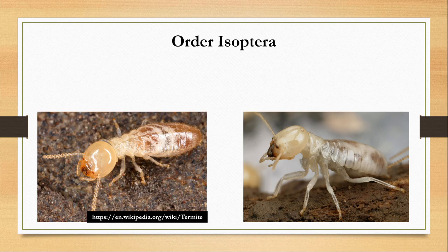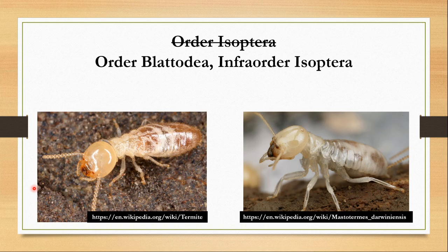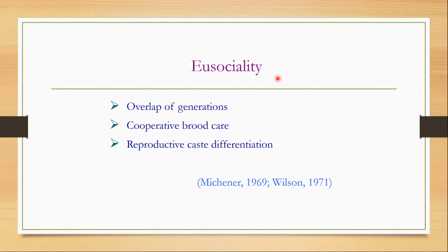Hello and welcome to my class. In this video, I am going to discuss the salient features and examples of order Isoptera, or the order of termites. Earlier, all termites were classified under order Isoptera. But after careful consideration of their characters and reviewing their similarities with cockroaches, they are now in recent literature classified under order Blattodea and infra order Isoptera. The classic entomology books still have termites under order Isoptera, so I am going to discuss it as such. But you should know that in modern literature, termites are classified under order Blattodea and infra order Isoptera.